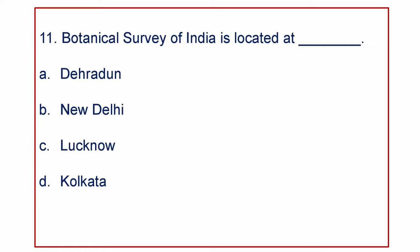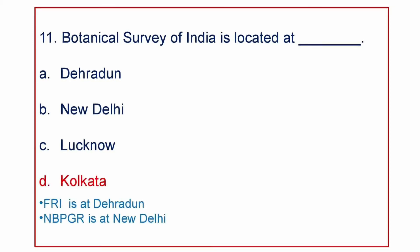Next question: Botanical Survey of India is located at — A) Dehradun, B) New Delhi, C) Lucknow, or D) Kolkata. The answer is Kolkata. Points to remember: FRI is at Dehradun, NBPGR is at New Delhi.